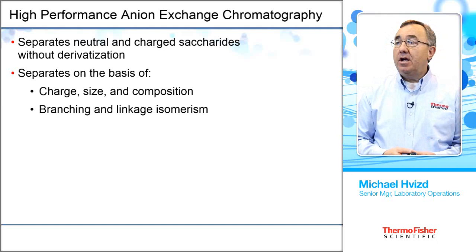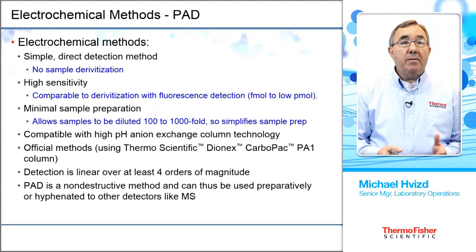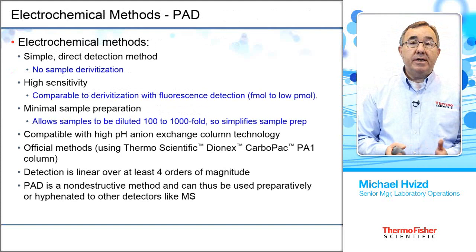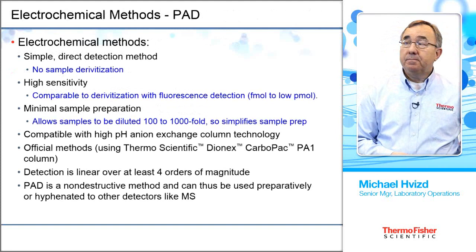Next, let's talk about pulsed amperometric detection. It's a simple, direct method — no sample derivatization. All you really need to do is dilute your sample in DI water and inject. Very high sensitivity, comparable to fluorescence detection. Minimal sample preparation.